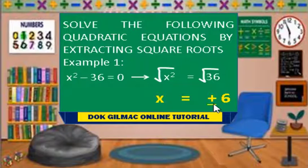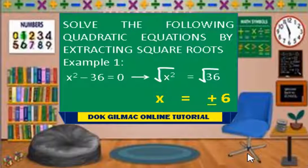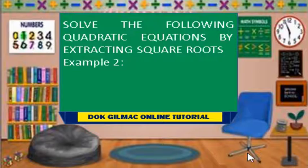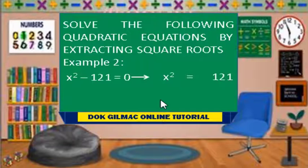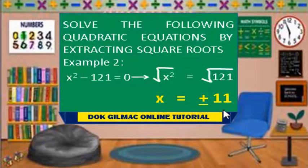Take note that in solving quadratic equations, you have to bear in mind that there are two roots, since the degree is equal to 2. Example number 2: x squared minus 121 equals 0. This implies that x squared is equal to 121. Extracting the square roots of both sides of the equation, we have x is equal to plus and minus 11.